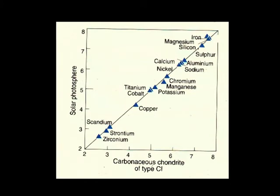What we can say for definite is that they have a common origin — common source material. The Sun and these chondrite meteorites have been made out of what is essentially the same stuff.